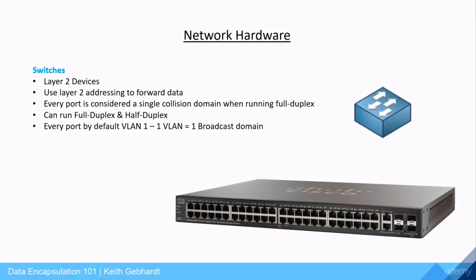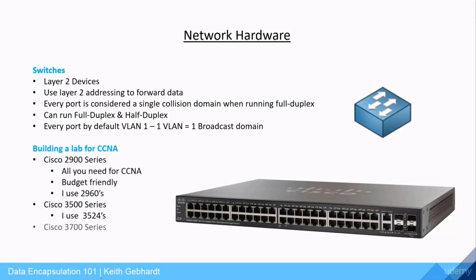Switches may be blue or silver but they look pretty similar from the front view. If you are trying to build a lab for your studies with physical hardware, I personally like the 2960s — they are pretty budget friendly. You can find them at a pretty good deal on Amazon or eBay used. A couple of other series I like are the 3500 series and 3700 series. I use the 3524s and 3750s a lot for my studies and training. A couple models of the 2960s and the 3750s are considered layer 3 switches, but that is more at a CCNP level — you only get introduced to some layer 3 concepts in your CCNA studies.